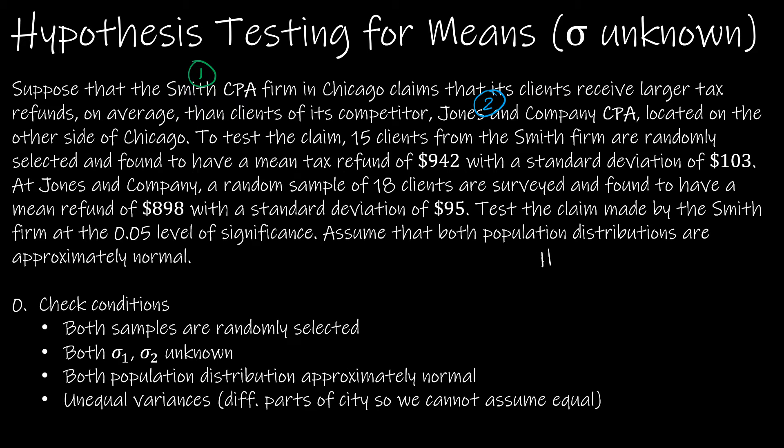And we are saying that one is greater than two. So that means my null hypothesis is that mu one is equal to mu two. And my alternative hypothesis is that the people at Smith receive larger tax refunds. So mu one is greater than mu two.